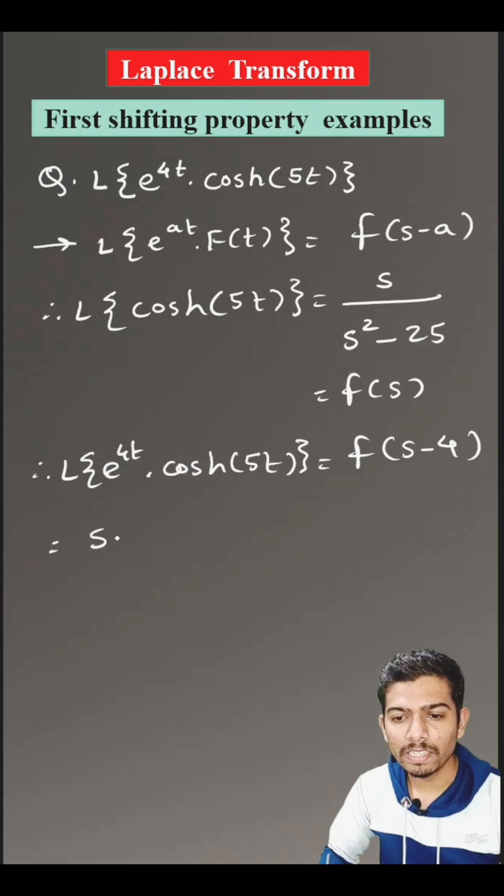Therefore, it is equals to s minus 4 divided by s minus 4 bracket square minus 25. After solving this,